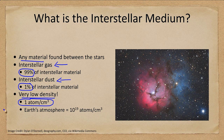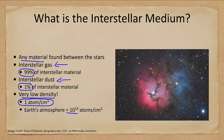Imagine a cube one centimeter on each side — there is just one atom in there. How does that compare? In Earth's atmosphere there are 10 to the 19th — that's a one followed by 19 zeros — atoms per cubic centimeter.